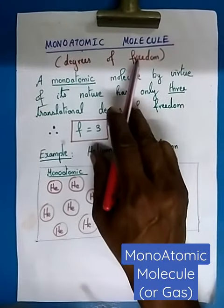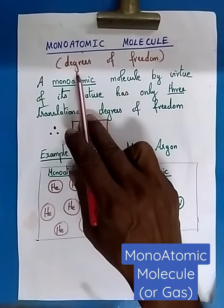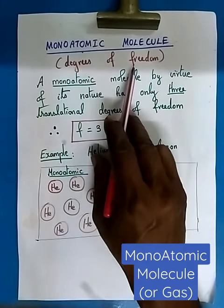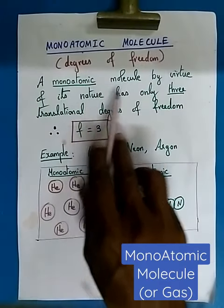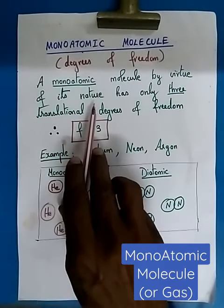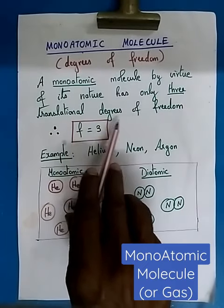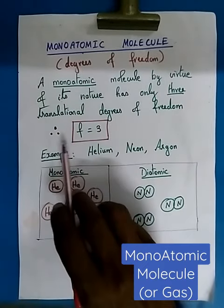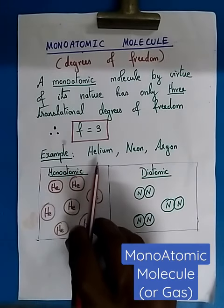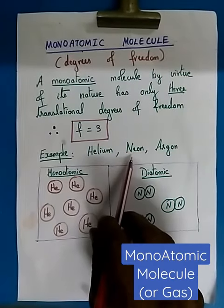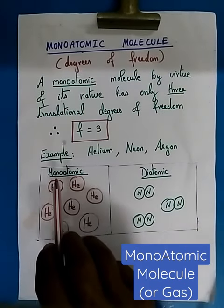Monoatomic Molecule. We are going to consider the degrees of freedom for a monoatomic molecule. A monoatomic molecule, by virtue of its nature, has only 3 translational degrees of freedom. Therefore, F is equal to 3. For example, helium, neon, and argon are all monoatomic molecules.